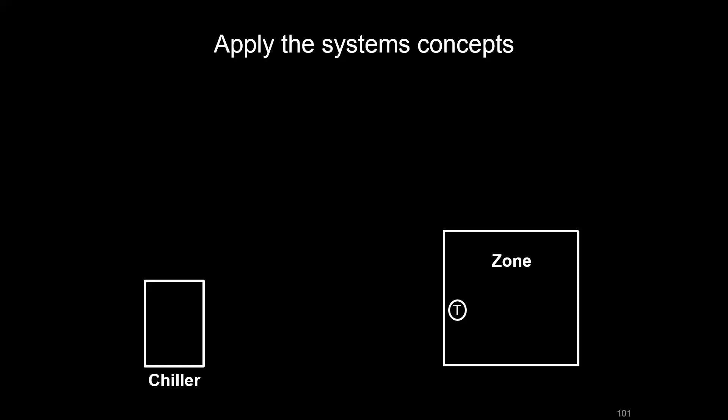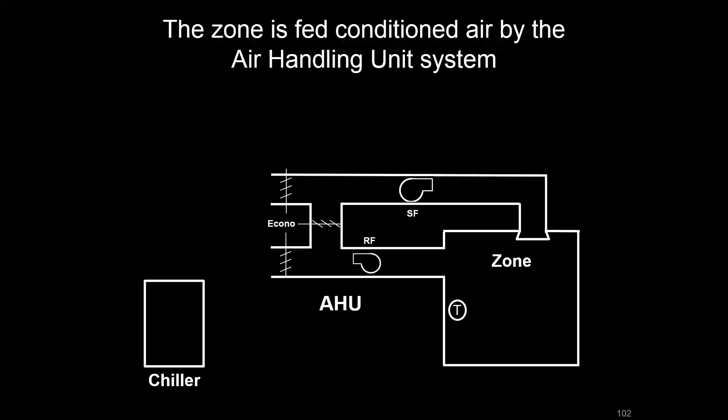If we look at these as interconnected systems, we say on the right we have the zone with the thermostat, that's going to determine how comfortable we need to keep the space. And on the left, let's say we have a chiller, and we're going to go into what a chiller looks like and how that's put together. But for right now, just assume that it's a piece of equipment that manages this zone load.